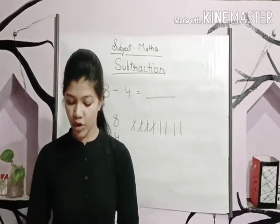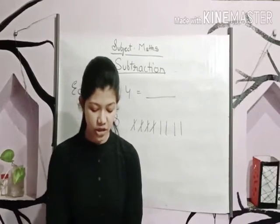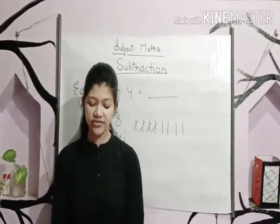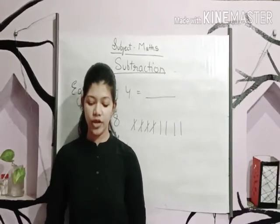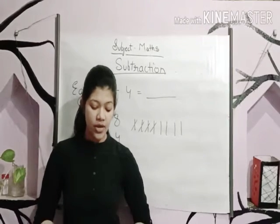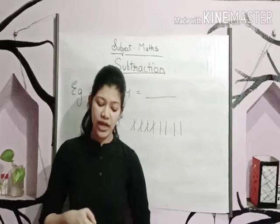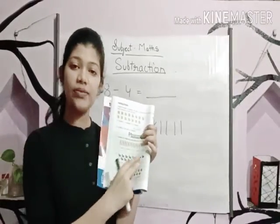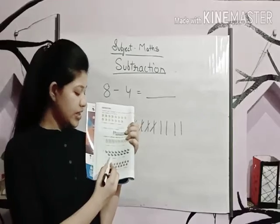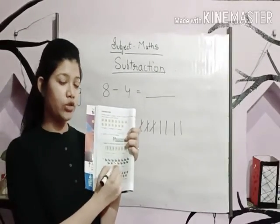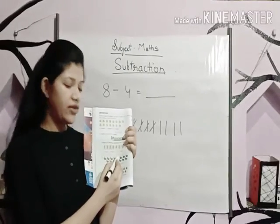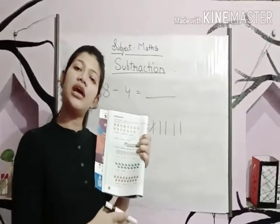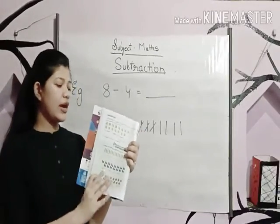I hope this much is clear to you all. Now students, look at the exercise given on page number 52, Exercise 3D. The first one is already done for you. Now let's come to the second one: fifteen brinjals minus five brinjals equals dash brinjals. We cut out five brinjals from fifteen, leaving ten brinjals. Like this, you have to do the rest.